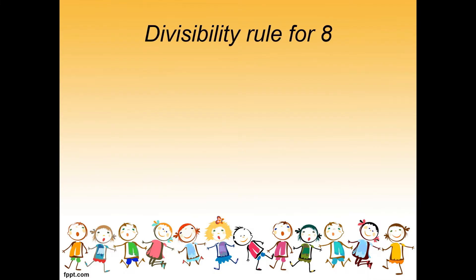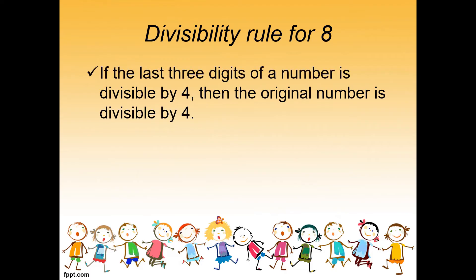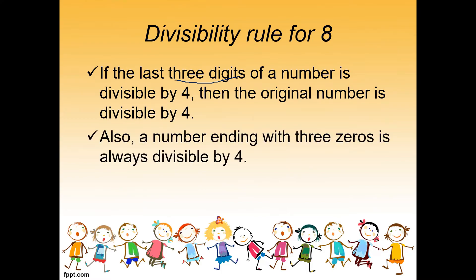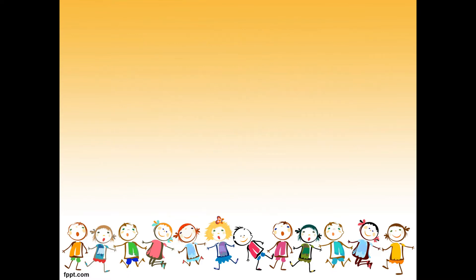Divisibility rule for 8: if the last three digits of a number is divisible by 8, then the original number is divisible by 8. Unlike divisibility by 4 which uses the last two digits, divisibility by 8 uses the last three digits. Also, a number ending with three zeros is always divisible by 8.